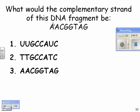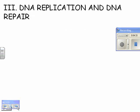So what would be the complementary strand of this DNA fragment: AACGGTAG? First of all, you can cross out any U's because that's RNA. And so it's this one, A goes with T, A goes with T, C goes with G, etc. So that's what complementary means.